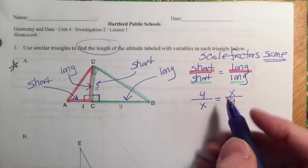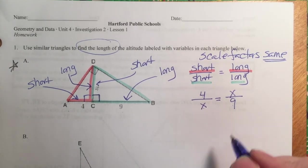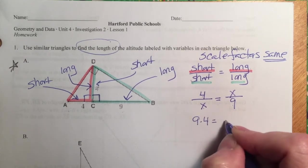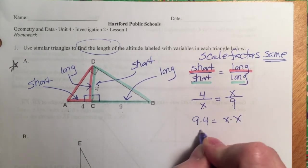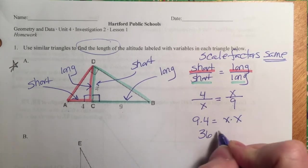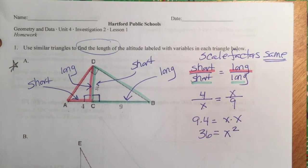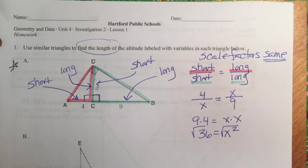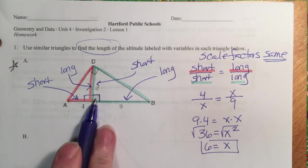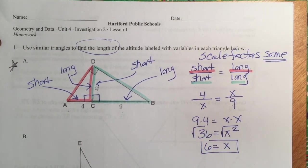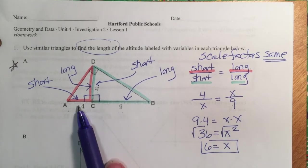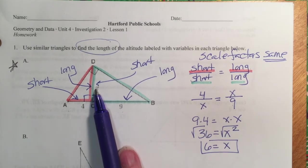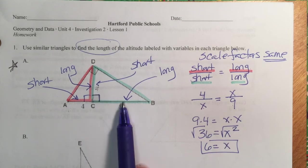We solve by cross-multiplying: multiply both sides by 9 and by X, and you get 36 equals X squared. Last step — square root both sides, and we get X equals 6. This side X is exactly 6 units long. The ratio of 4 to 6 is the same as 6 to 9.